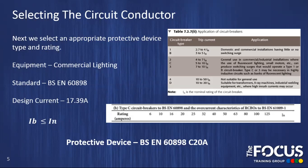Next we have to select an appropriate protective device type and rating. Remembering that the equipment is commercial lighting, the standard is BS EN 60898, and our design current is 17.39 amps. If we look at table 7.2.7 taken from the IET on-site guide, we can see the most appropriate circuit breaker type would be type C. If we then look at a section from chapter 41 of BS 7671, which gives us the common types of circuit breakers and their ratings, we can see the common ratings for type C circuit breakers to BS EN 60898. Remembering that we need to choose a protective device rating that is either equal to or greater than our design current, we would choose a 20 amp. Therefore a protective device would be a BS EN 60898 C20.